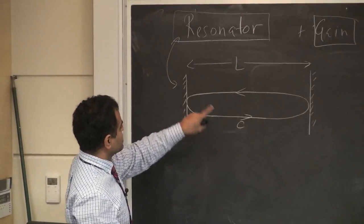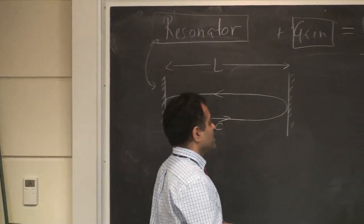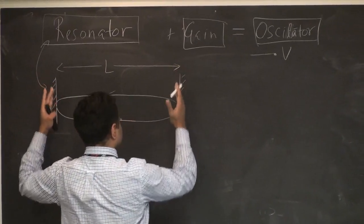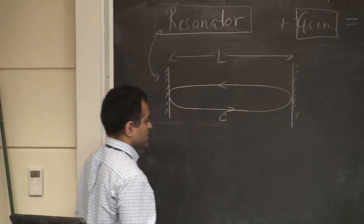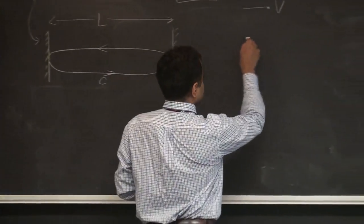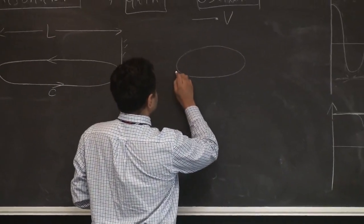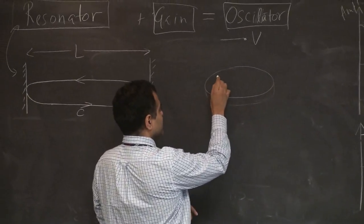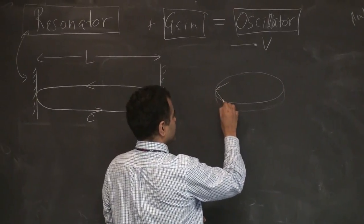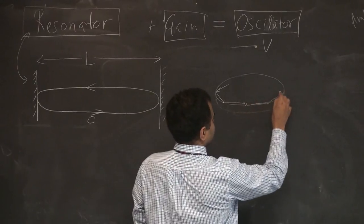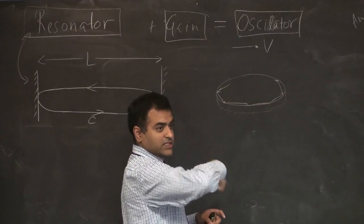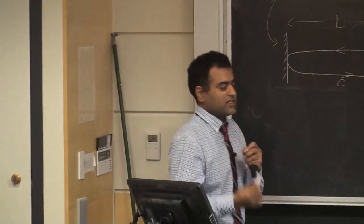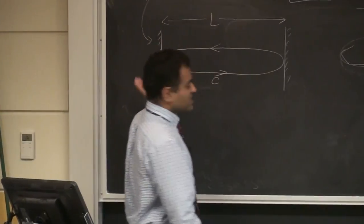You can build light resonators in many ways - the two-mirror cavity is reality in many lasers, but there are also whispering gallery resonators where light goes around a disc reflecting back and forth, and ring resonators, and all kinds of fun resonators. But let's discuss this simple one - two mirrors - because it's the simplest to understand.